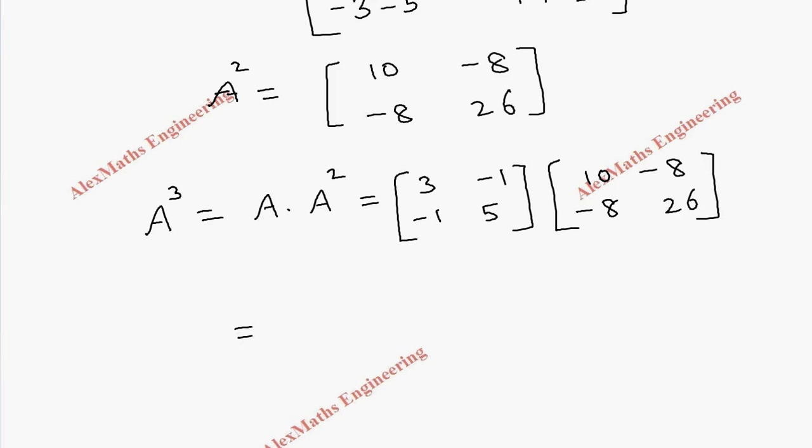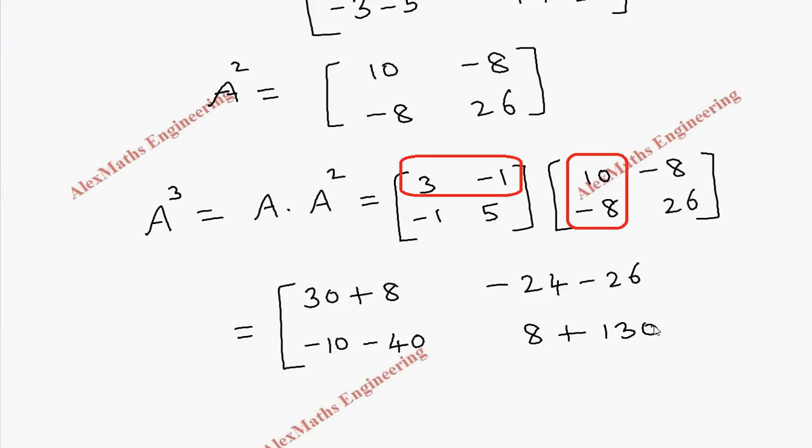Now, same procedure. We take the first row and multiply the first column of the corresponding elements. It is 10 into 3, 30, then plus 8. Then first row with second column: 8 threes are 24 with a negative sign, then this is minus 26. Then second row with first column, minus 10, minus 40. And second row with second column, 8 plus 26 into 5, that gives 130.